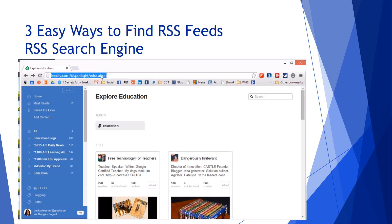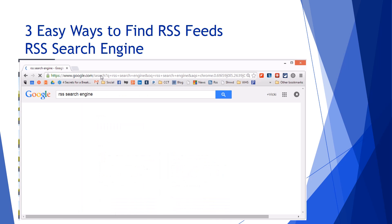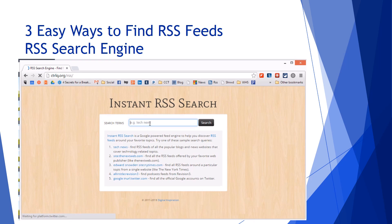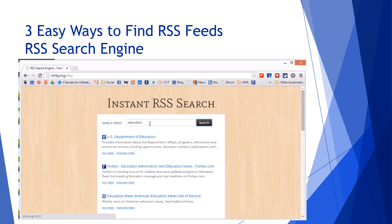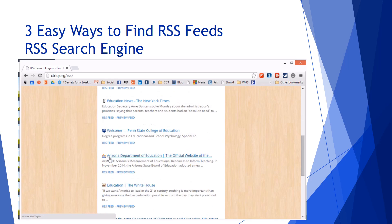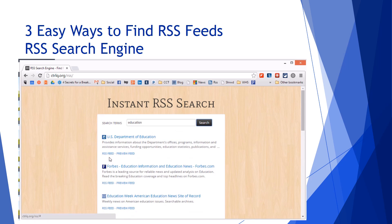The next thing I can do is type 'RSS search engine' into the Omni box — it's called the Omni box because you can do more than one thing with it. There are quite a few RSS search engines out there. I like to use CTRLQ.org. I can type in 'Education' — now this is for more advanced users, you're going to find a lot of different topics. You can click on your RSS feed; it won't give you a popularity rating, but if you're really trying to research a particular topic, you can find RSS feeds that way. That's a little more advanced.